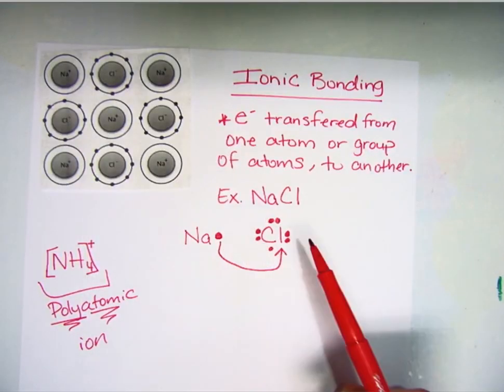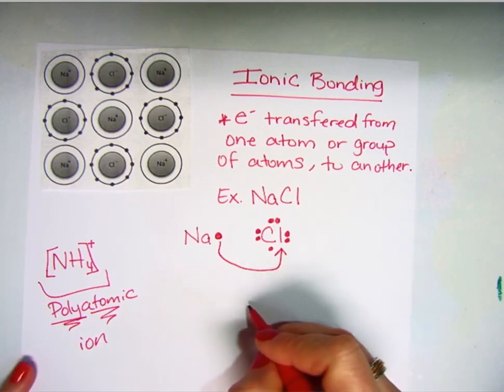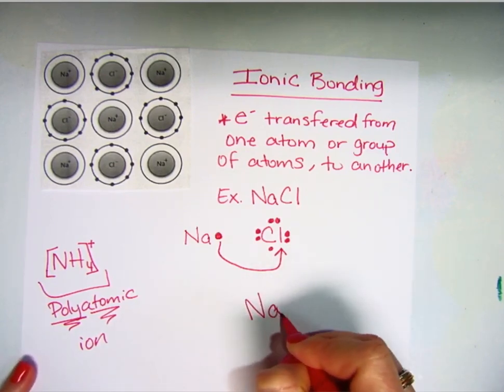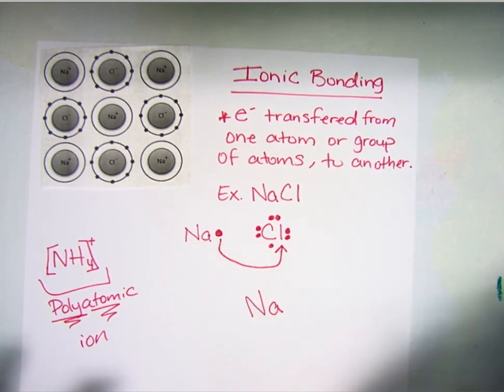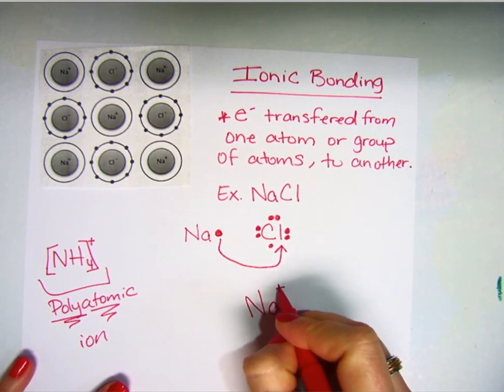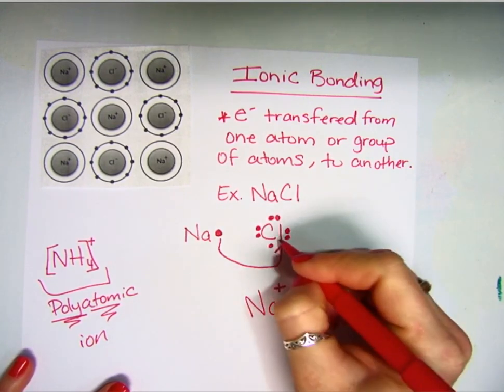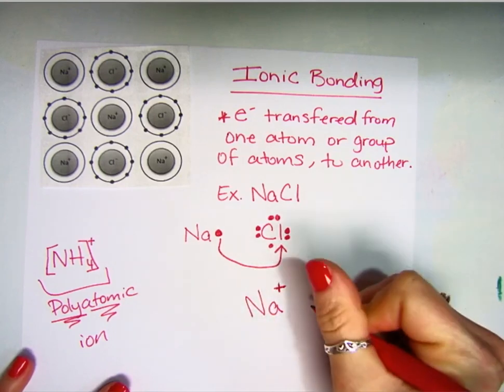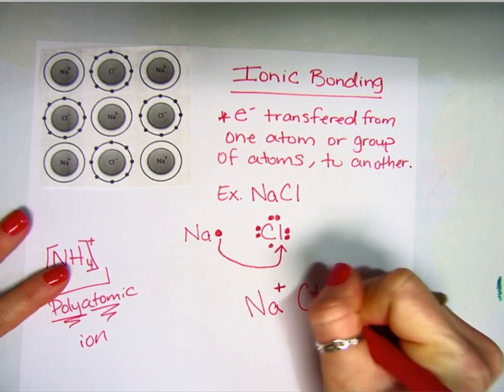So sodium loses, chlorine gains. When this happens, once sodium loses its valence electron, we're not going to draw any more dots on sodium, but we are going to indicate that it is positively charged. And then this chlorine, which has now gained an electron, has a filled level. We're going to just fill that up.